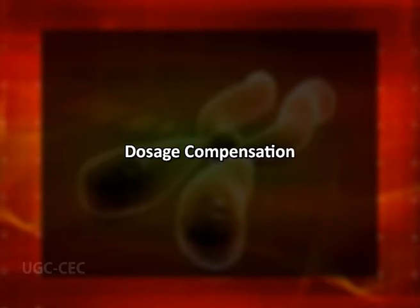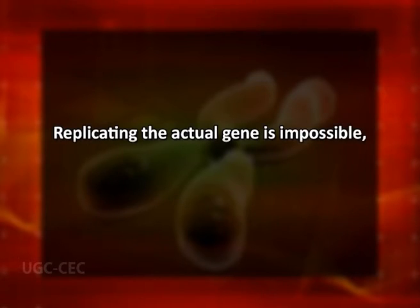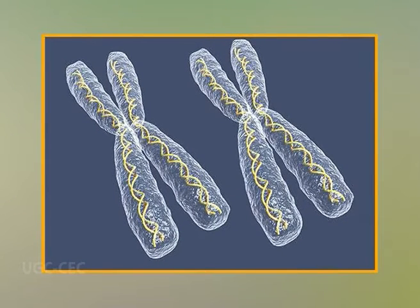Now, coming to the last part of today's lecture: Dosage Compensation. Dosage Compensation is the equalization of gene expression between the males and females of a species. Because sex chromosomes contain different numbers of genes, different species have developed different mechanisms to cope with this inequality. Replicating the actual gene is impossible; thus, organisms must equalize the expression from each gene. In humans, the female silences the transcription of one X chromosome of each pair and transcribes all information from the other expressed X chromosome. Thus, human females have the same number of expressed X-linked genes as do human males, with both genders having essentially one X chromosome per cell from which to transcribe and express genes.